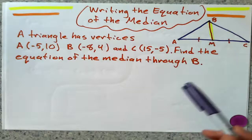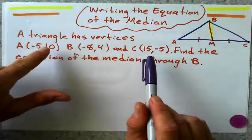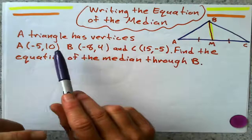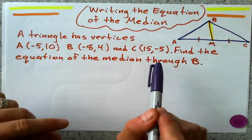Let's try this one again. This triangle does not represent an accurate representation of these points. The triangle has vertices A, B, and C. Find the equation of the median that goes through B.